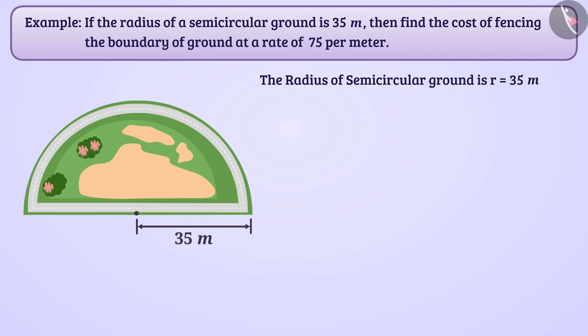To find the total cost of fencing, we should find the length of the boundary of this ground. That means, we have to find the perimeter of this ground.